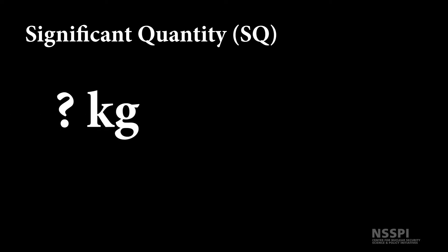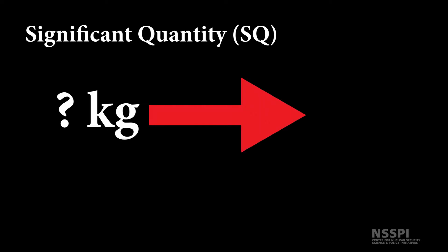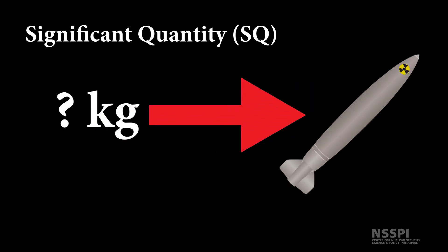In safeguards, you will often hear the term significant quantity. A significant quantity, or SQ, is the approximate amount of nuclear material for which the possibility of manufacturing a nuclear explosive device cannot be excluded. In other words, it is the minimum approximate amount of material someone would need to create a nuclear weapon. The significant quantity differs depending on the material category and does account for unavoidable losses due to the conversion and manufacturing process.